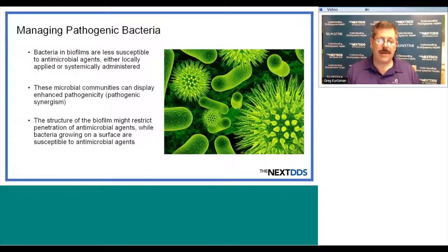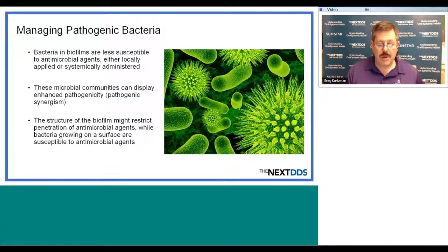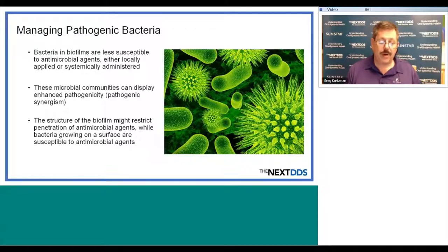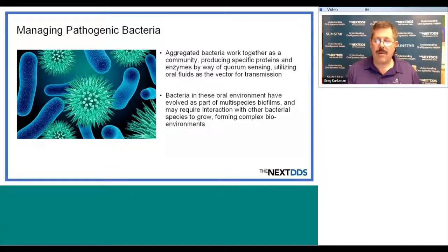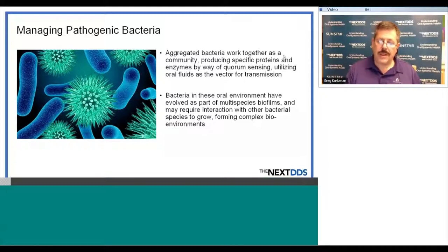How do we manage pathogenic bacteria? Bacteria in biofilms are less susceptible to antimicrobial agents, either locally applied or systemically administered. These microbial communities display enhanced pathogenicity through synergism, and the structure of the biofilm may restrict penetration of antimicrobial agents. When bacteria are on a surface (planktonic), antibiotics can destroy them, but when placed in that sticky biofilm matrix, they're fairly resistant. Aggregated bacteria work together as a community, producing specific proteins and enzymes via quorum sensing, utilizing oral fluids as a vector of transmission.